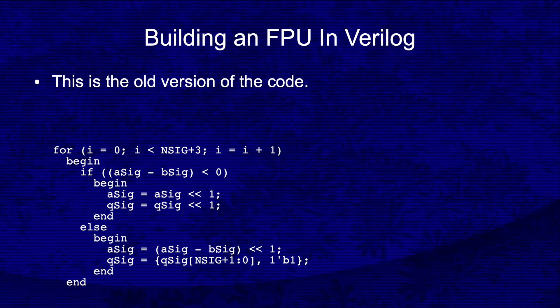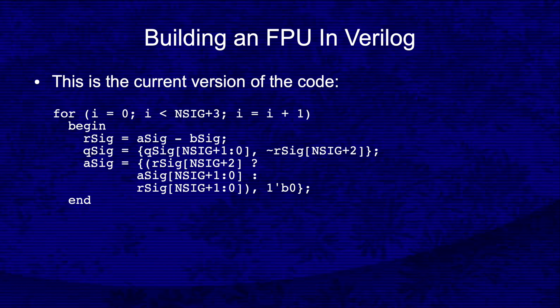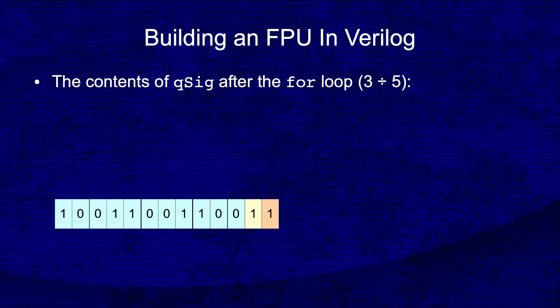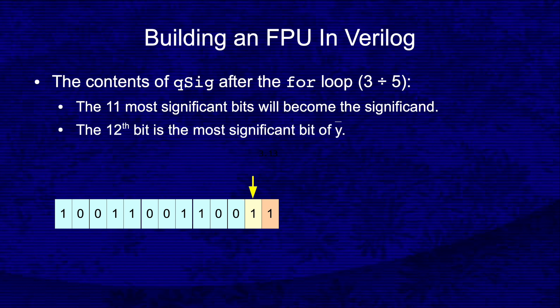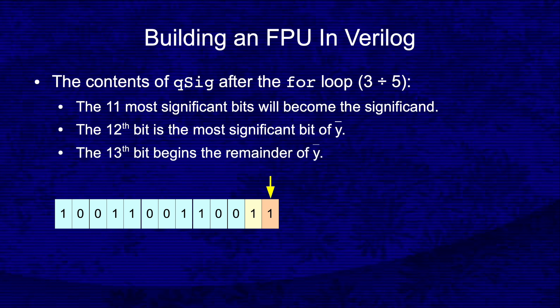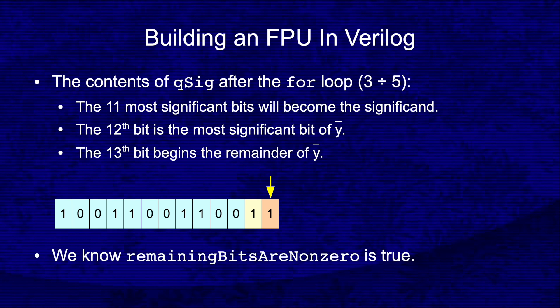Now that I've explained how the code works, I'm going to share a secret with you. The version of the code I just explained isn't the current version — I presented that old version because it's easier to understand. This is the current version of the code. It does exactly the same work, but is a little more efficient and a little harder to read. Pause the video and study both versions until you can see that they are functionally equivalent. Now I want to examine what gets computed in the qsig register when dividing 3 by 5. The first 11 bits are the x-bar bits. The 12th bit is the most significant bit of y-bar. And the 13th bit begins the remainder of the y-bar bits. For this case, we have enough bits to know that the remaining bits of y-bar are non-zero — enough information to correctly round the quotient significand value.